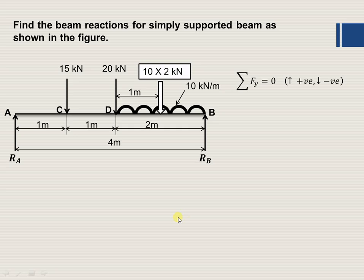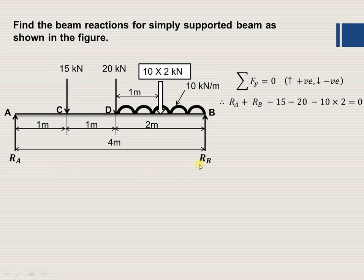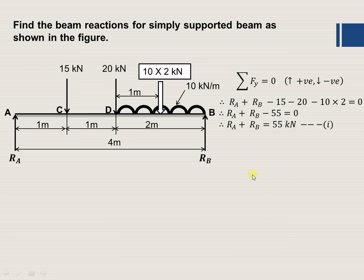Now let us find RA and RB by applying the conditions of equilibrium. The first condition is: summation of forces in the y-direction equals 0. Upward forces are positive and downward forces are negative. RA and RB act upward (positive), while 15 kN, 20 kN, and the converted UDL of 20 kN act downward. Therefore, RA plus RB equals 55 kN.